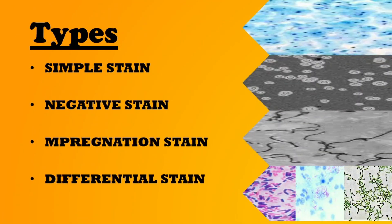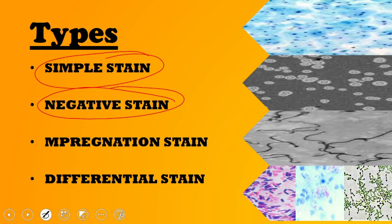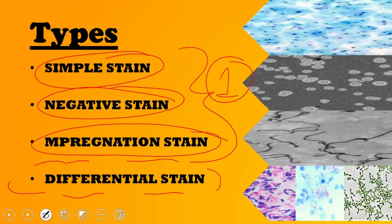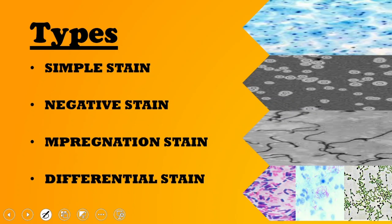The main topic to discuss today is the different staining techniques. Simple stain, negative stain, and impregnation stain are shorter topics where only a single stain is used. Differential stain is a bigger topic with three subtypes — Gram stain, ZN stain, and Albert stain — each represented by distinct images.